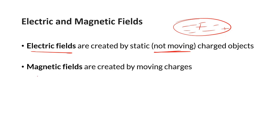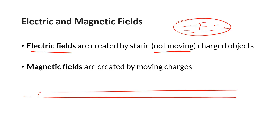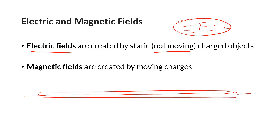Now we're going to have a wire, and we'll hook that up to some sort of power source and run the current - conventional current from plus to negative. When we do that, there's going to be a field created around this wire that we'll be able to detect with a compass.